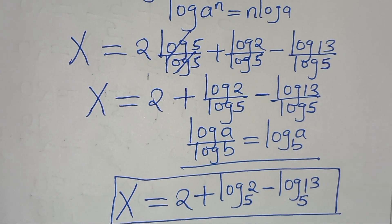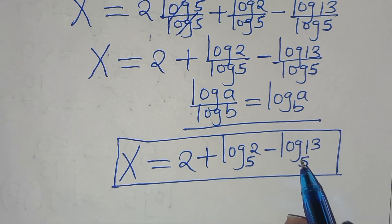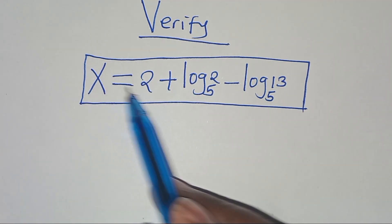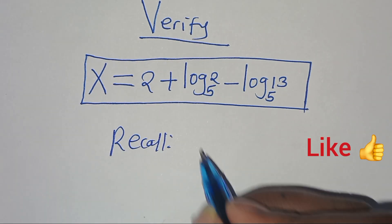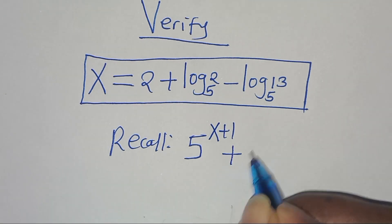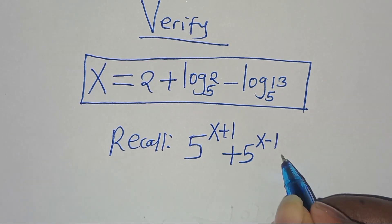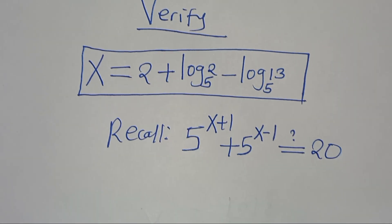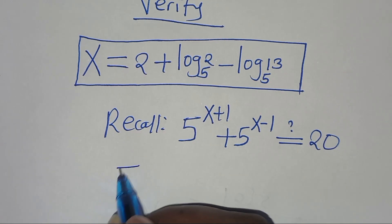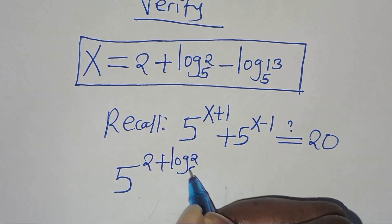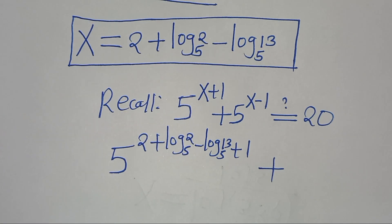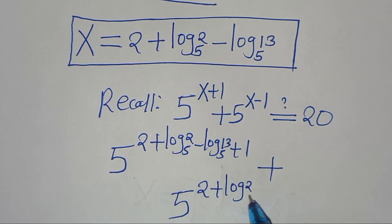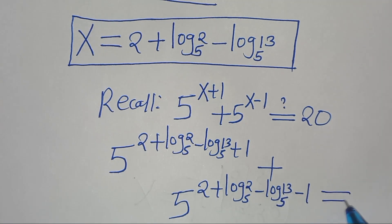This is the value of x. The next step is to verify that this value of x satisfies the equation. Let's verify that x equals 2 plus log base 5 of 2 minus log base 5 of 13 satisfies the equation. Recalling that 5^(x+1) + 5^(x-1) should equal 20, we substitute the value of x: 5 to the power of (2 + log₅2 − log₅13 + 1) plus 5 to the power of (2 + log₅2 − log₅13 − 1) equals 20.